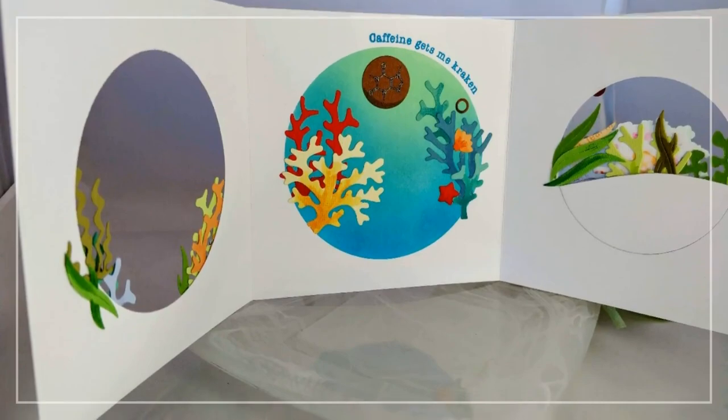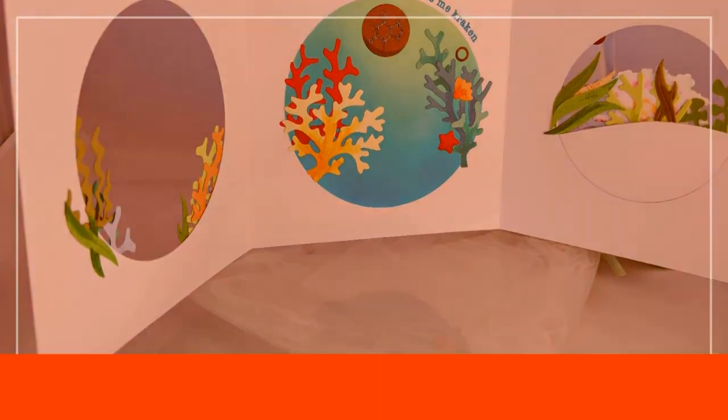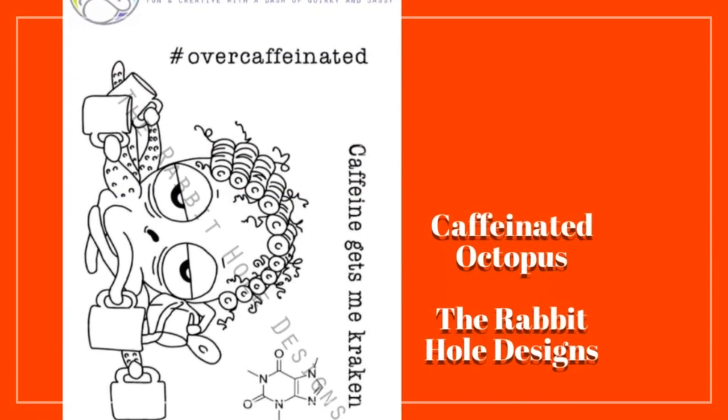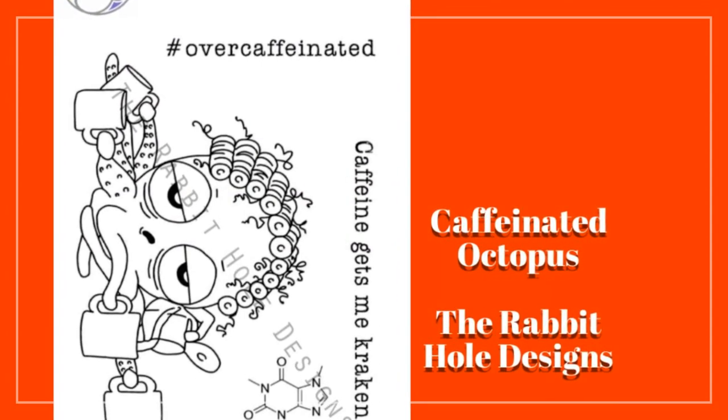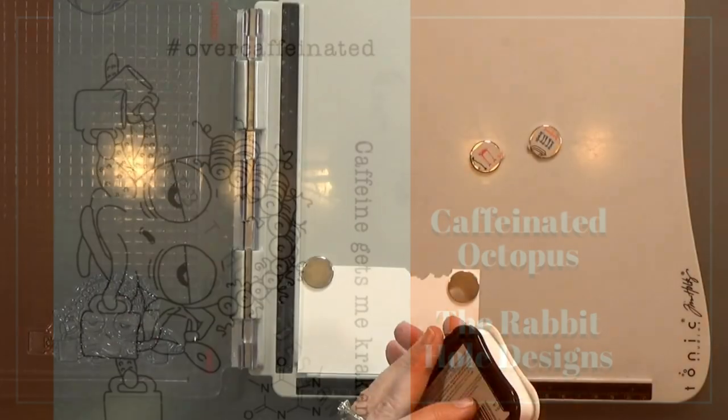Bonus, I get to show you this tri-fold tunnel card that I made using the caffeinated octopus set. Isn't it fun? I'm a sucker for a good pun. And I have so many ideas for that little caffeine molecule. Such a cute set. Now let me show you how I put this card together.